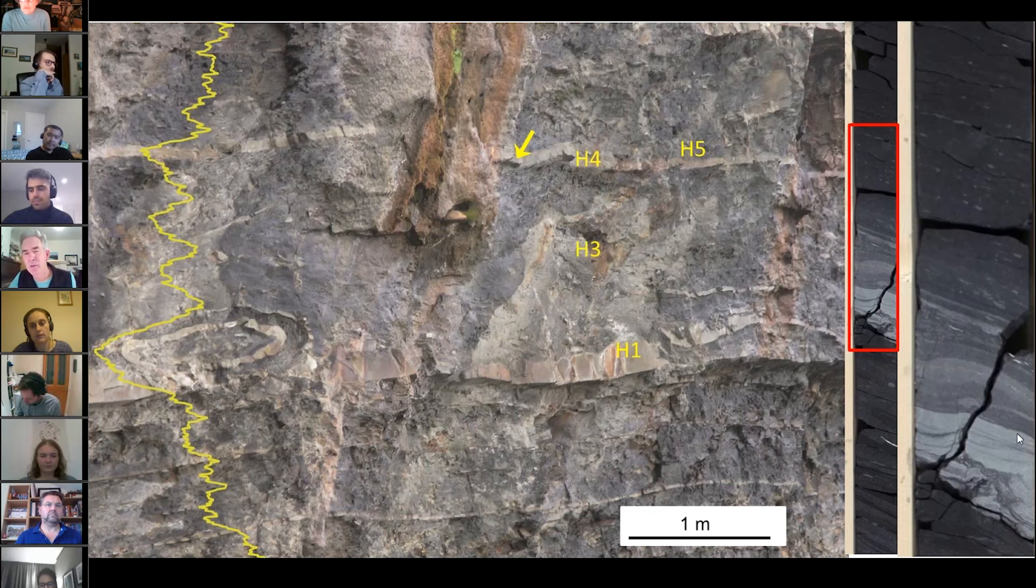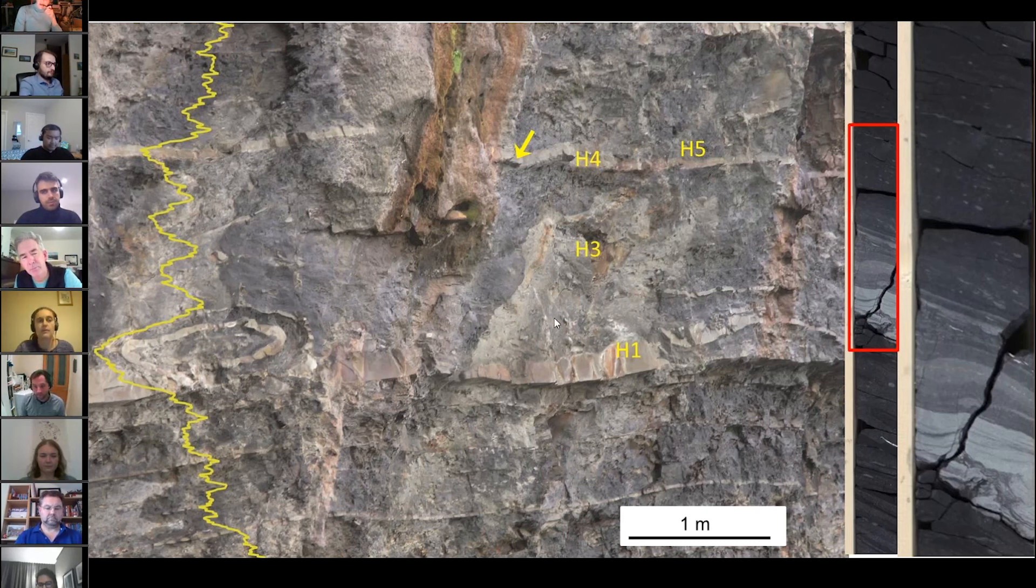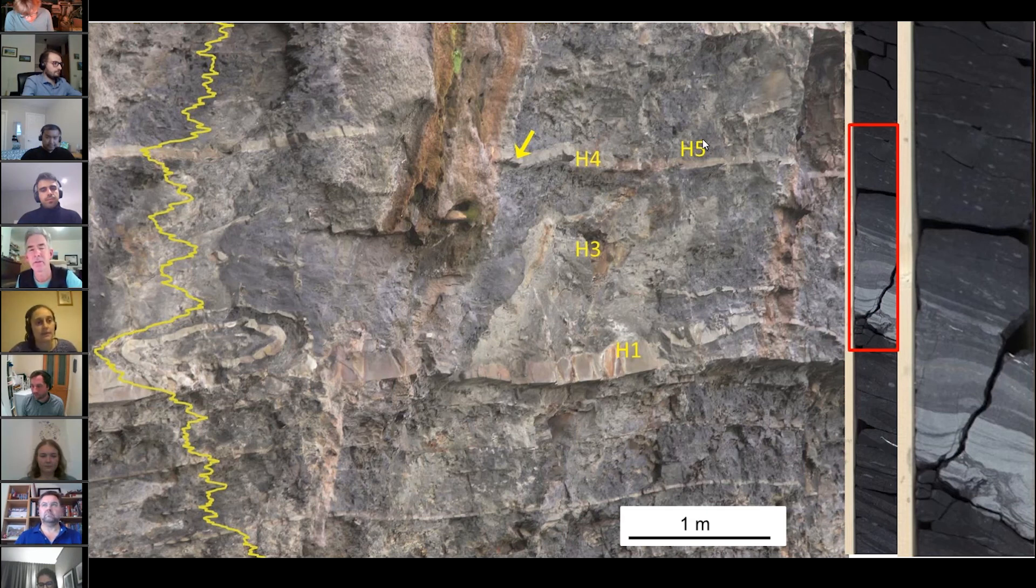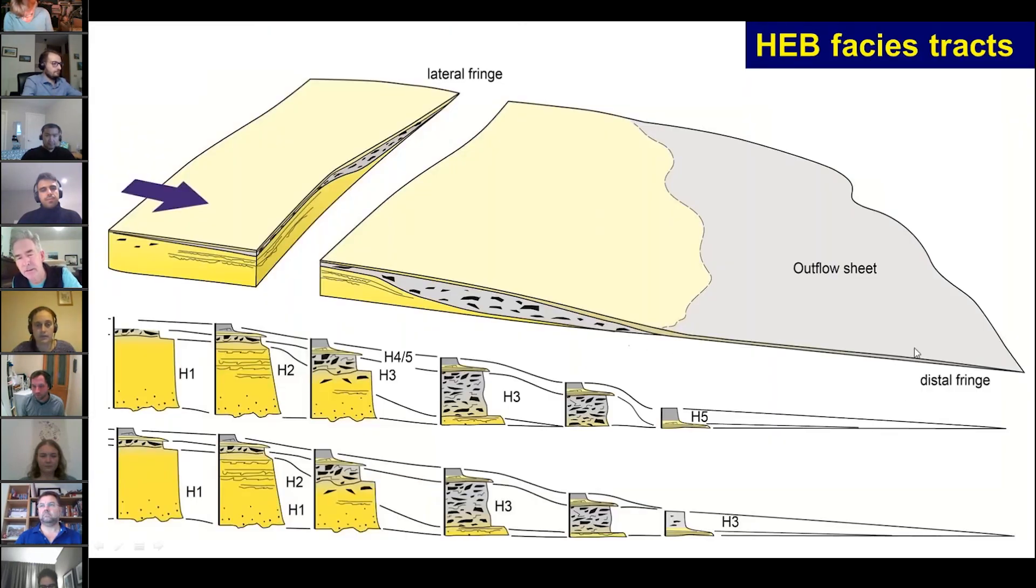You can see that upper sand becomes quite dirty and banded and then up into pseudonodular mud. So it looks like the last part of the flow also has suppressed turbulence in at least two different ways. By acquiring clasts and converting to a debris flow, but also by suspended clay from the top down suppressing turbulence. This upper level is what we think runs distally to form these outflow sheets. So it's a kind of H4-H5 bed that goes distally, we think, rather than the H3 bed. But people have argued about that.